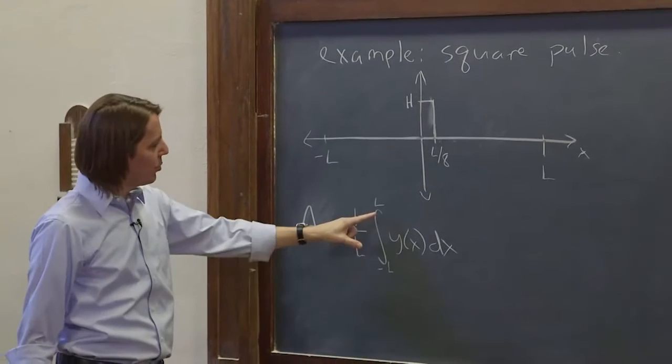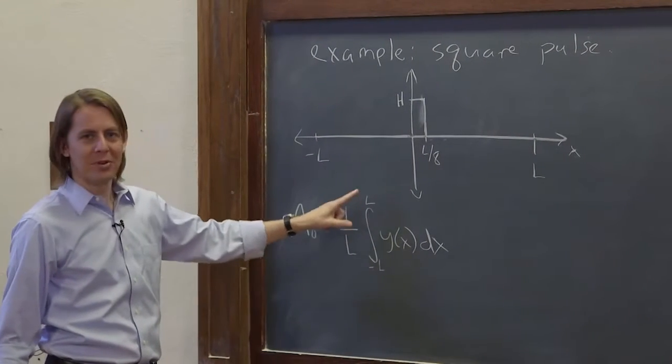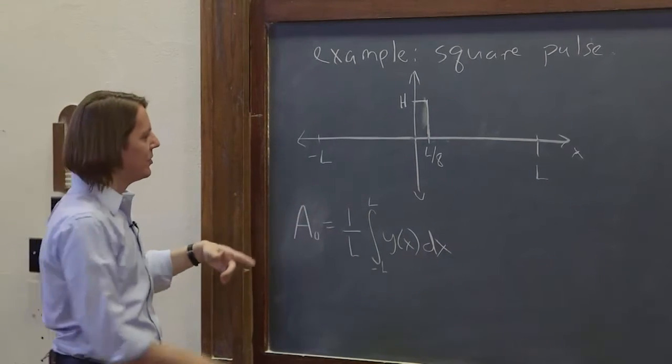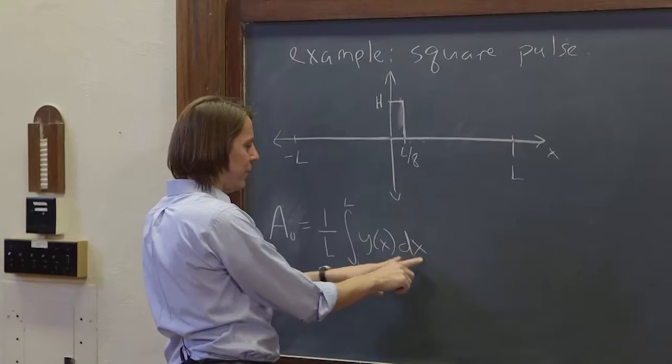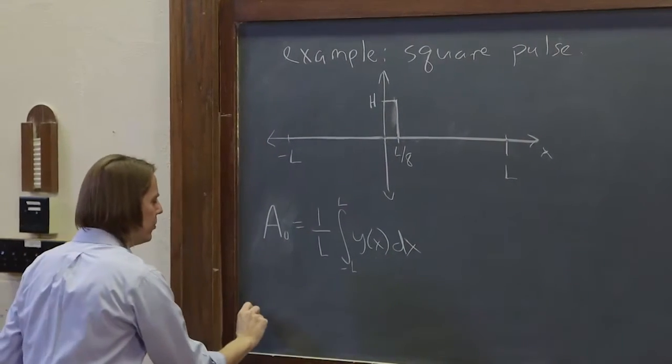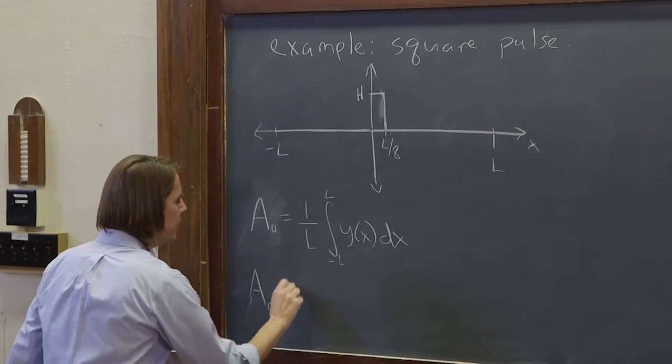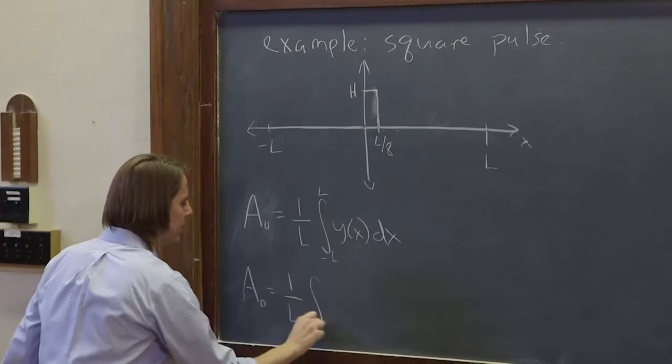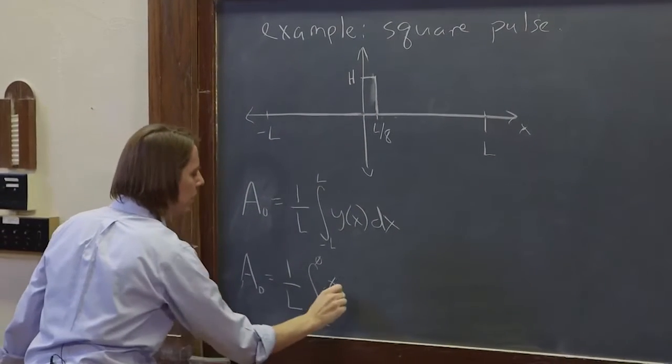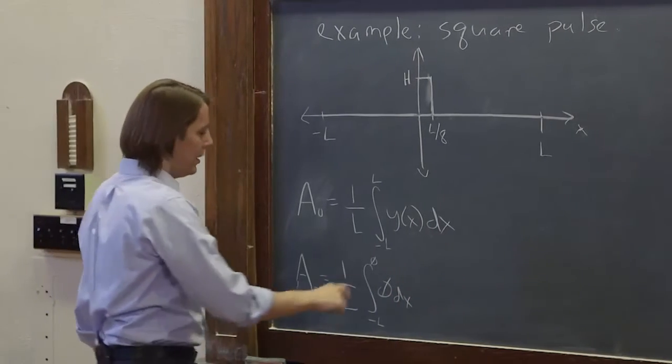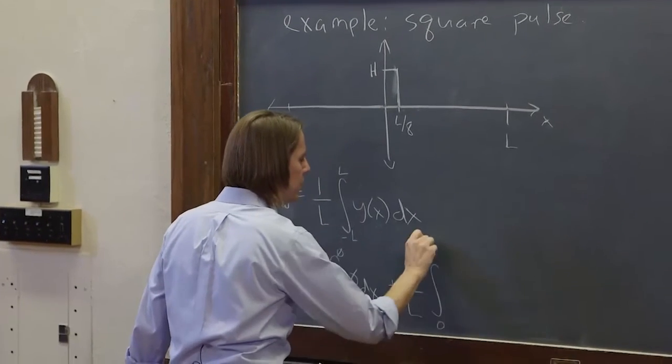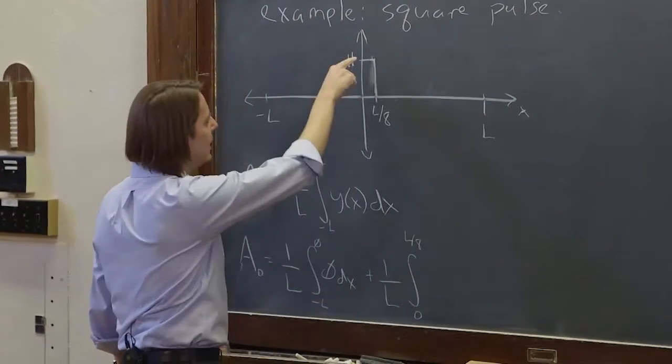So the way you deal with this is you remember what this squiggly line means. The squiggly line for the integral is an s because it means sum. Since this is really summing up all the parts along x, all the dx's along the x-axis, we can split it into three integrals. So we can write it as a0 equals 1 over l times the integral from minus l to 0, and there it's 0, so we can ignore that part. And then plus 1 over l times the integral from 0 to l over 8, and it's just h.